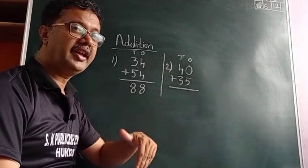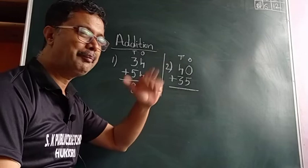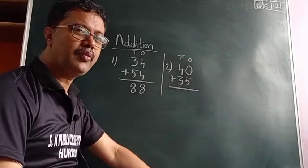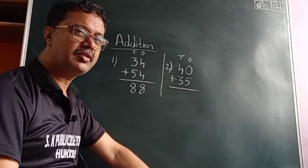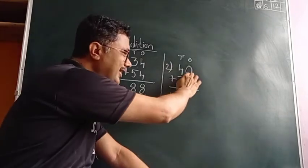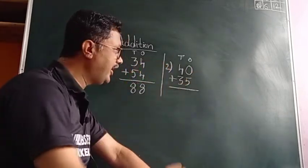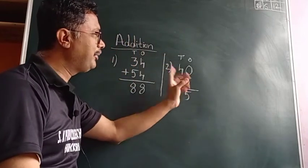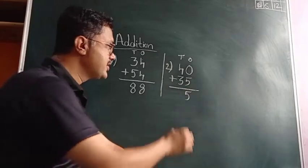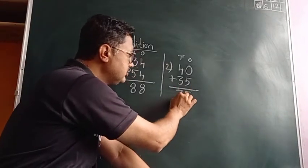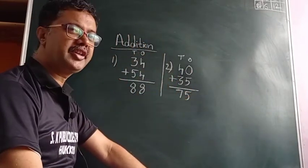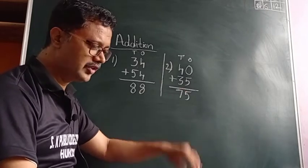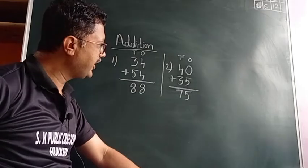We are doing a warm-up recall. Zero plus five is equal to five, because nothing is there and we are adding five. Four plus three is equal to seven. Very good! Now let us start with the next number.